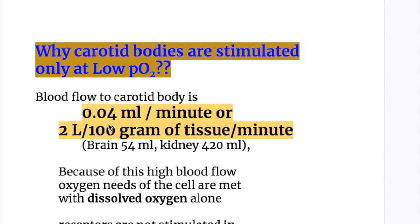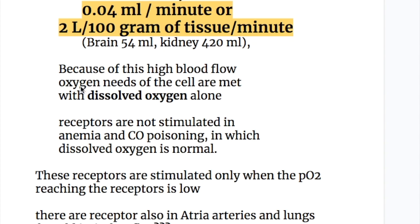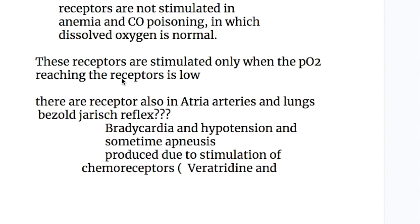Blood flow to the carotid body is 0.04 ml per minute, or 2 liters per 100 grams of tissue per minute — very high compared to the brain at 54 ml per minute or the kidneys at 420 ml per minute. Because of this high blood flow, the oxygen needs of the peripheral chemoreceptor cells are met with dissolved oxygen alone. Therefore, these receptors are not stimulated in anemia or carbon monoxide poisoning, where dissolved oxygen is normal, and are stimulated only when PO2 reaching the receptor is less than 60 mmHg.